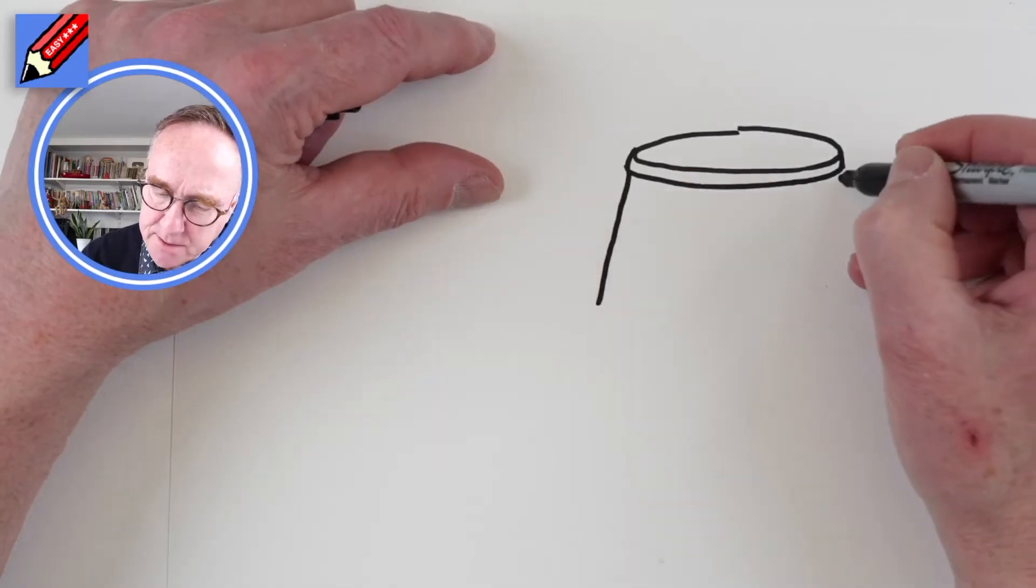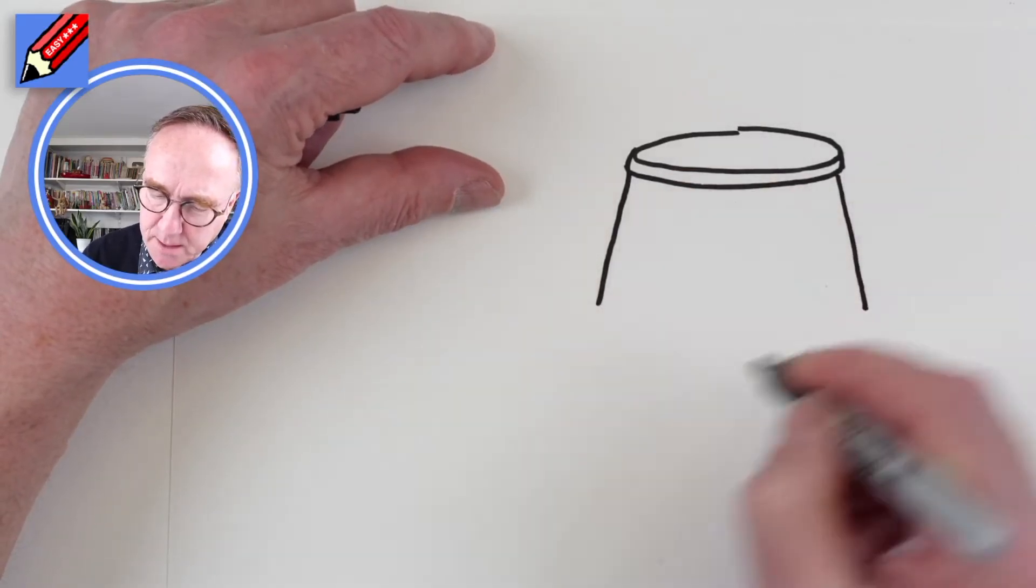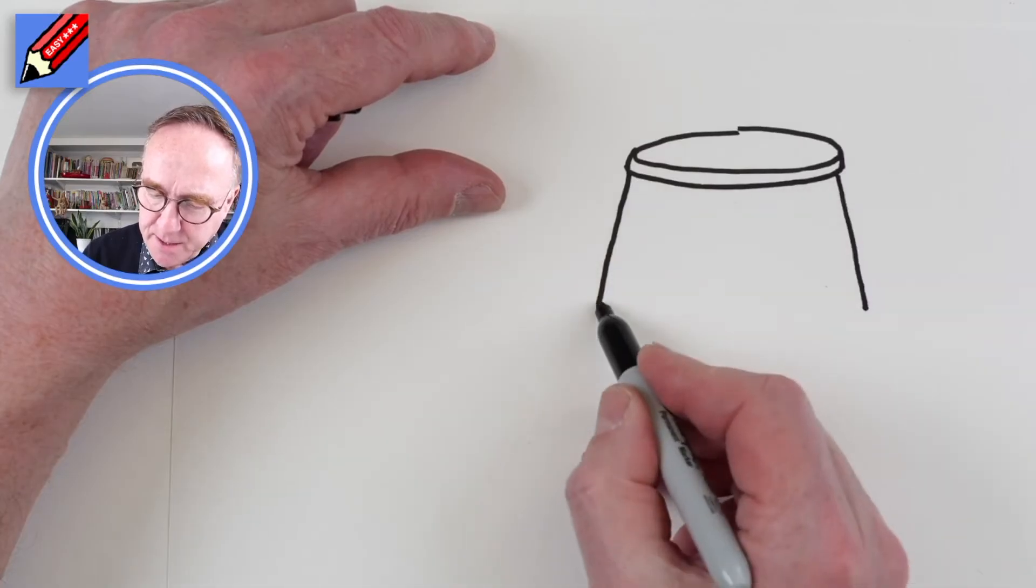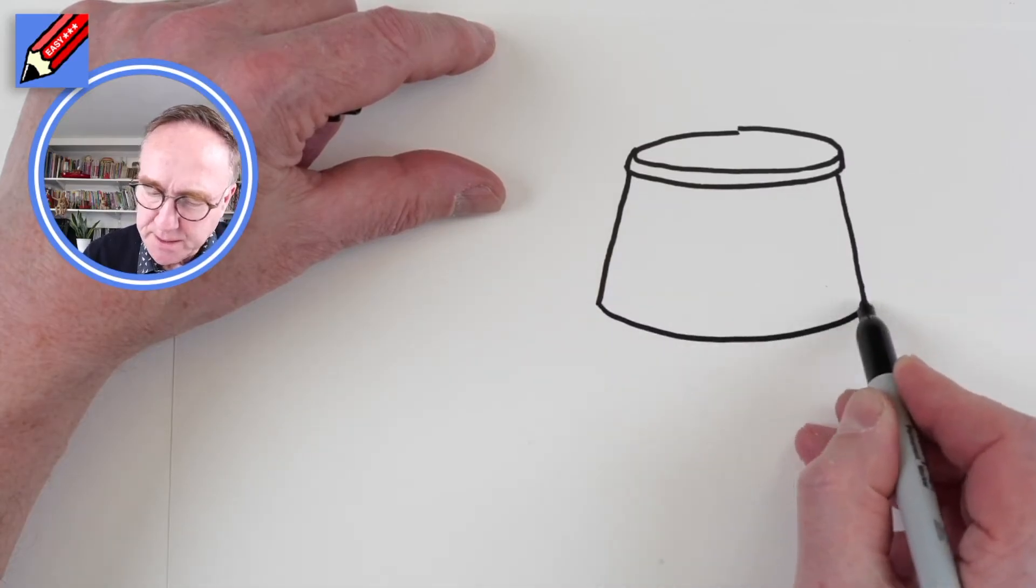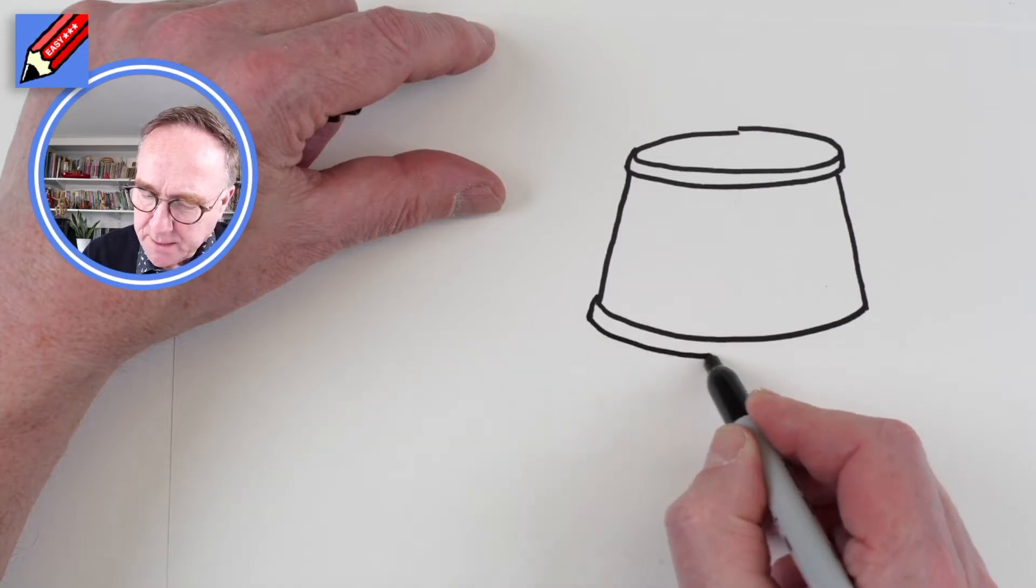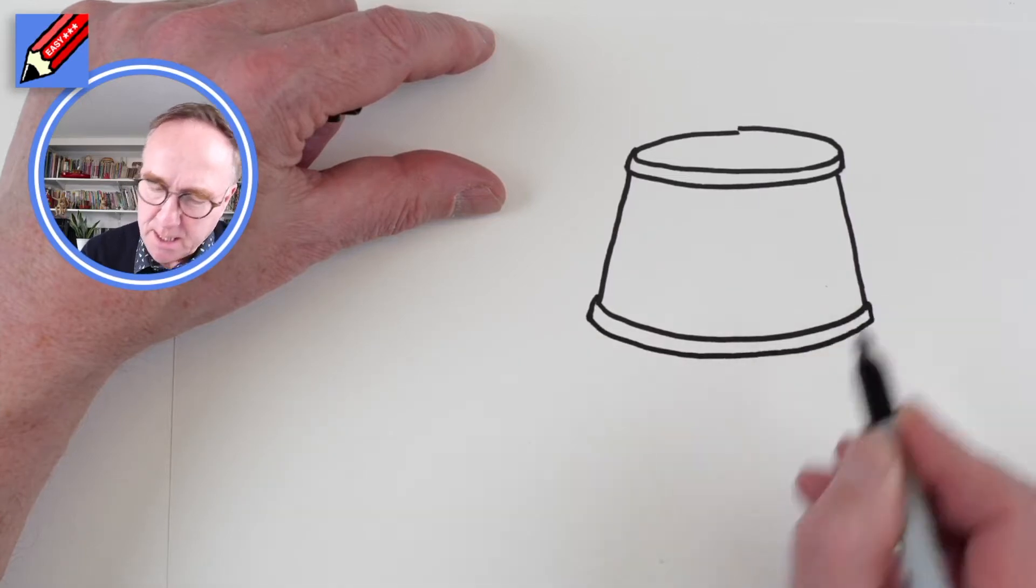Then we go down at an angle, so this is the shade, and then we want to copy that kind of curve like that to join that up there and then come down a little bit like that, around and up there.